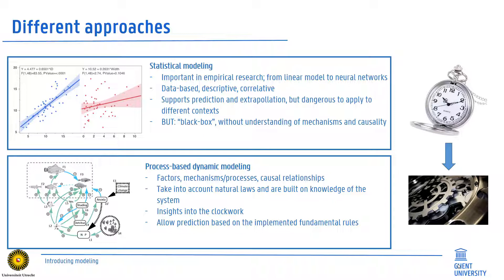Statistical models contrast with process-based or mechanistic models that are built on knowledge of a specific system. Such models include all the relevant processes and allow thus insights into the specific drivers of a certain system. So while statistical models can be seen as analogous to perfectly working watches to know the time, mechanistic models allow insights into the clockwork as well.